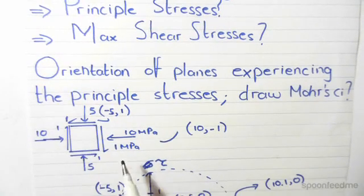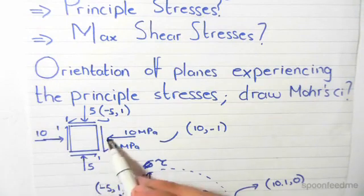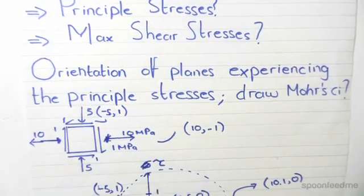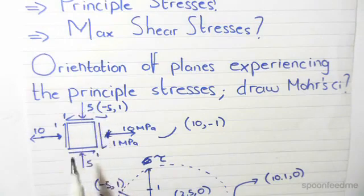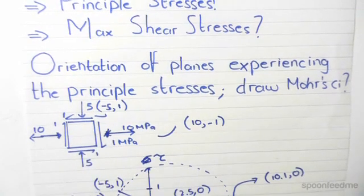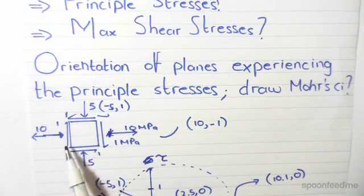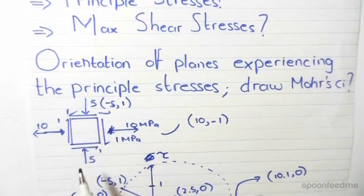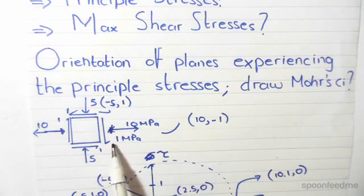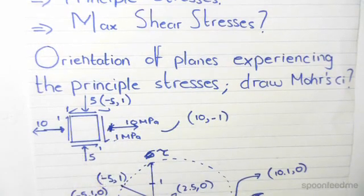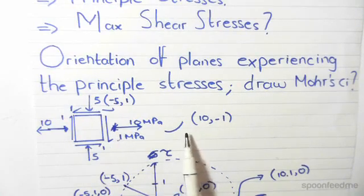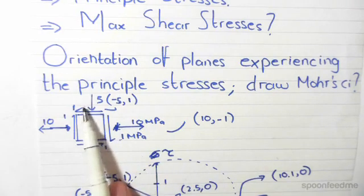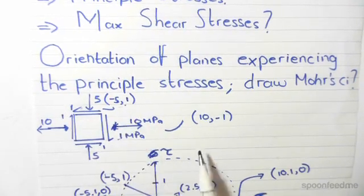Looking at the element, we have normal stresses in the x-direction of 10 MPa and normal stresses in the y-direction of 5 MPa. We also have shear stresses of 1 MPa on the element. On this side the shear stress is making a clockwise moment, so this is minus 1. On this side we have an anti-clockwise moment, so it's positive 1.